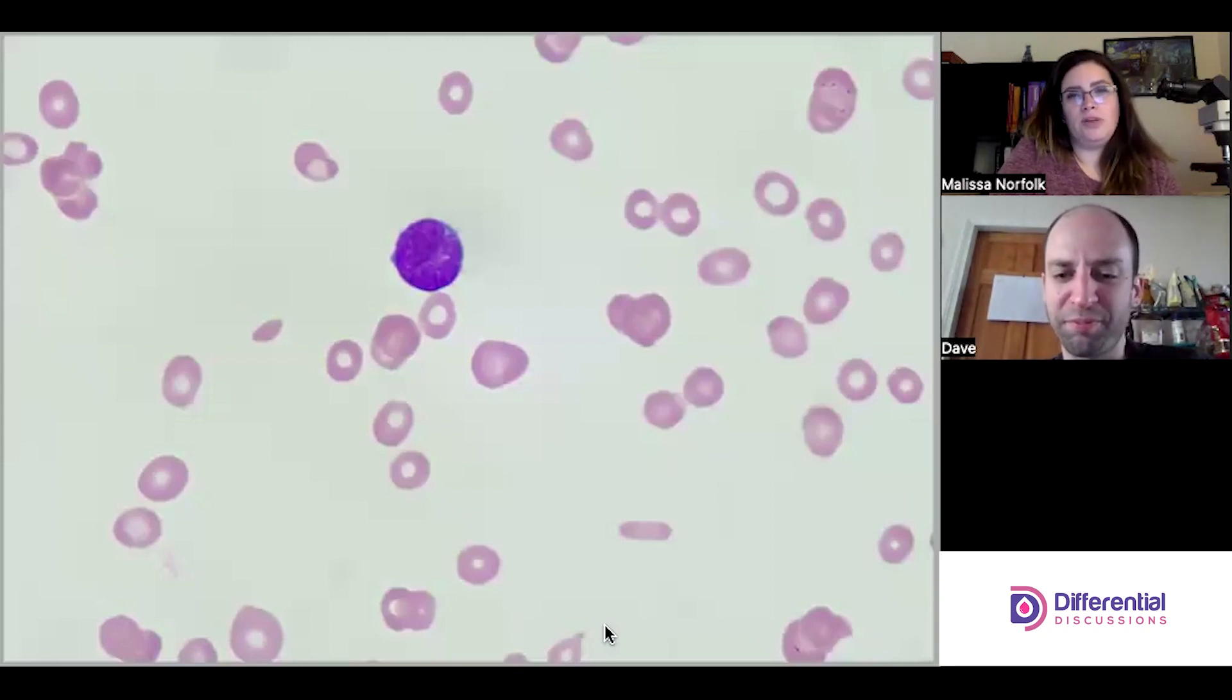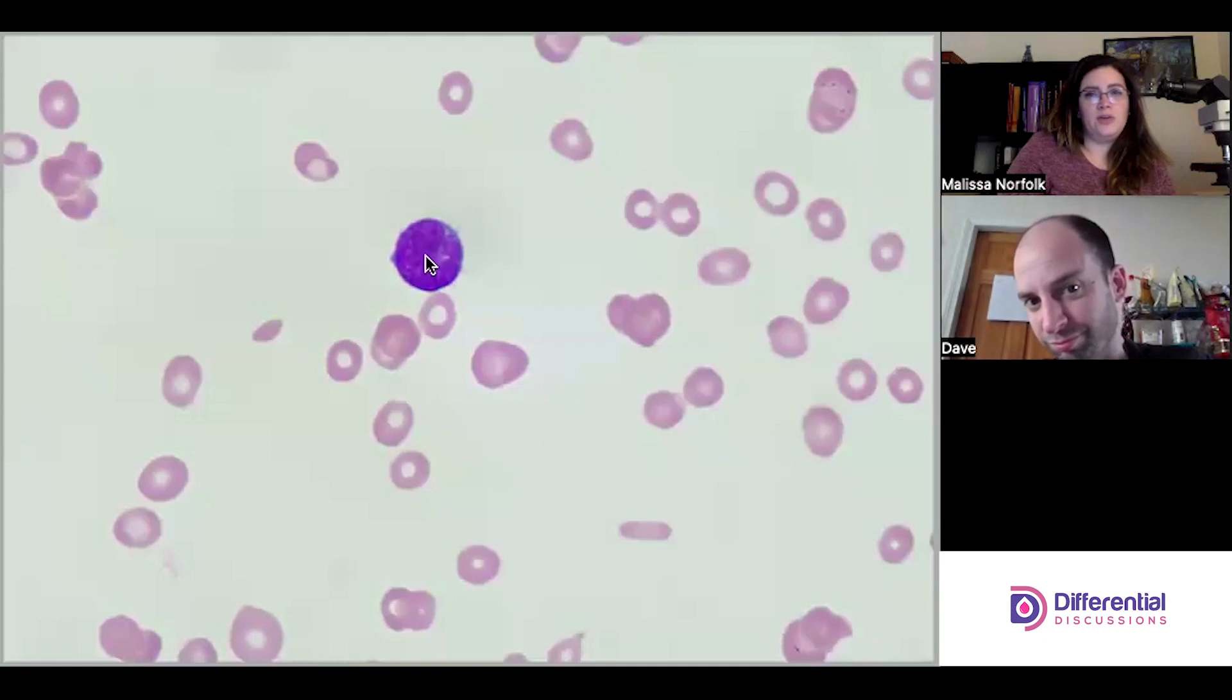This one's interesting - we don't really see quite the prominent nucleoli. Like there might be one in here, but it's hard to tell because it looks like there's a distinct lobe sort of going through it. There's little clefts in here, but they're also lobulated.